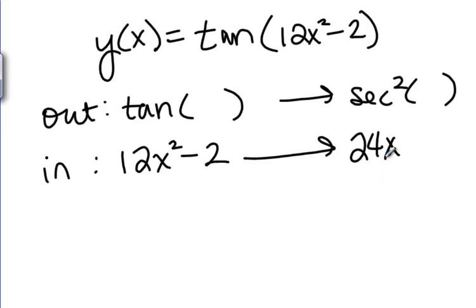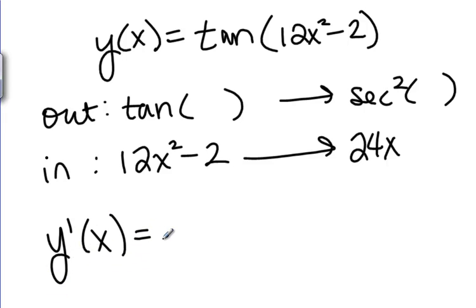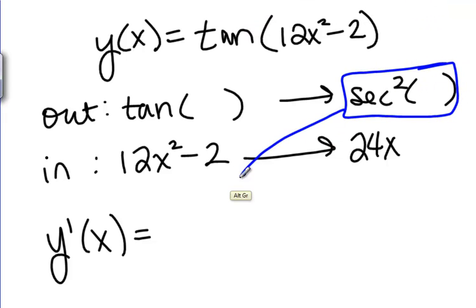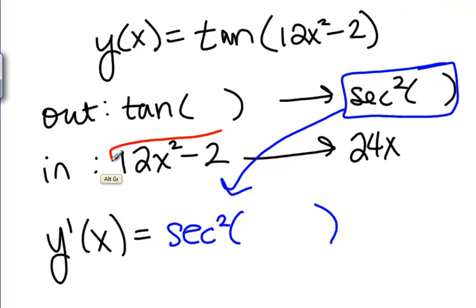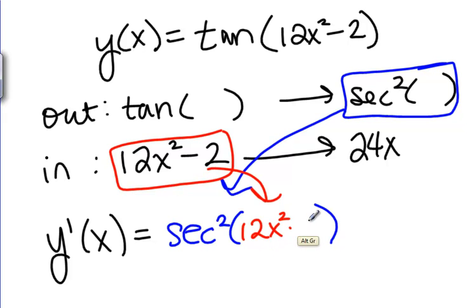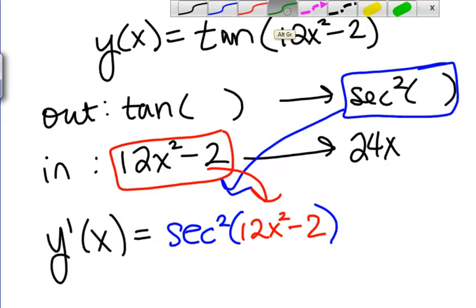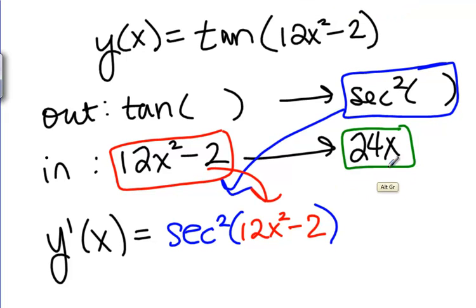Now if we follow the chain rule, Y prime of X is the derivative of the outside function — with the inside function plugged in unchanged — times the derivative of the inside function out here at the end. That's how we apply the chain rule to take the derivative of a composition of functions.